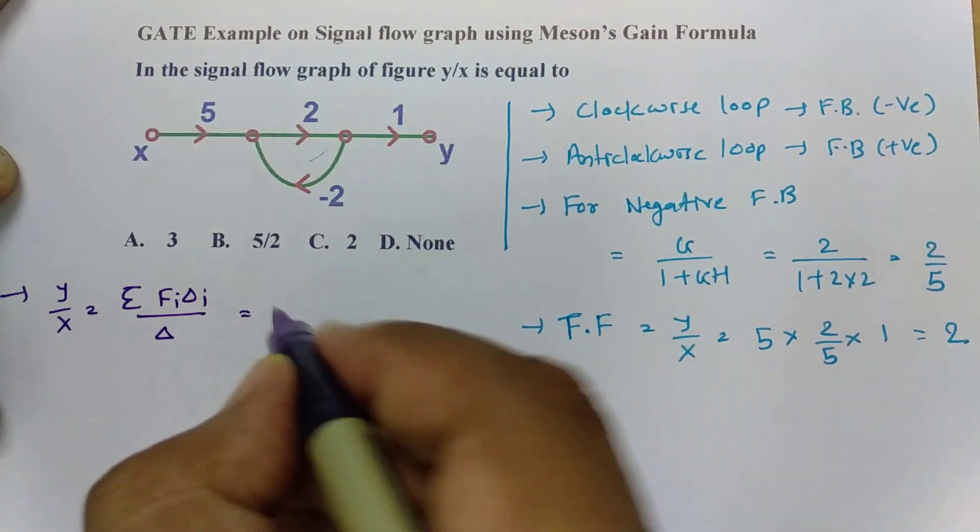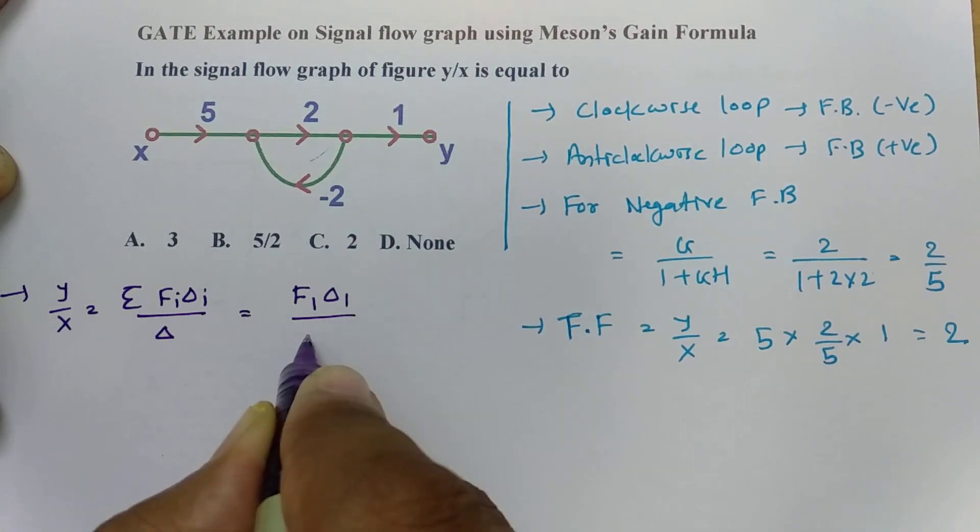Where here only one path is there. So this formula will be F1 delta 1 by delta.